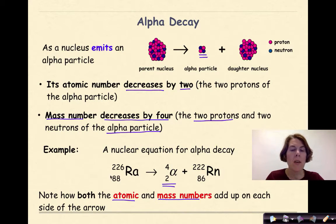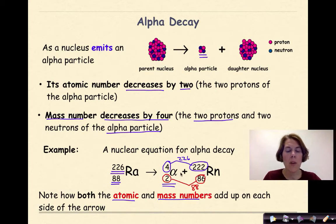Note how both the atomic and the mass numbers add up on each side of the arrow. What do we mean by this? The total mass that we start with is 226. If I take the four from the alpha particle and the 222 from the Rn, and I add those together, I get 226. The atomic number at the beginning for Ra is 88. If I add together the two here and the 86 here, add those two together, I get 88. So we have a conservation as we undergo this nuclear decay. What I start with is still accounted for in what I end with.